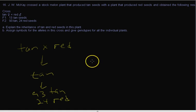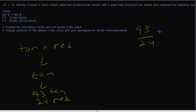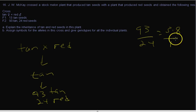The way to approach these problems is to start with simple assumptions and see if they fit. This looks like a pretty good example of a monohybrid cross because it looks like a 3 to 1 ratio. If you calculate 93 divided by 24 we get about 3.8 to 1, which might be a little high — it's closer to 4 to 1 than 3 to 1.